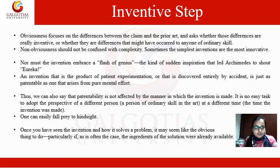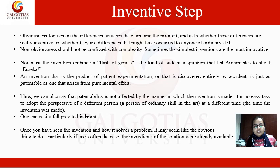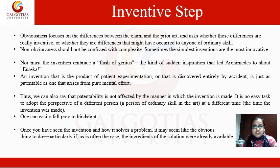Obviousness focuses on the difference between the claim and the prior art. You would be comparing your product with previously available products, and asking whether these differences are really inventive, or whether they are differences that might have occurred to anyone of ordinary skill. Non-obviousness should not be confused with complexity — sometimes the simplest inventions are the most innovative.